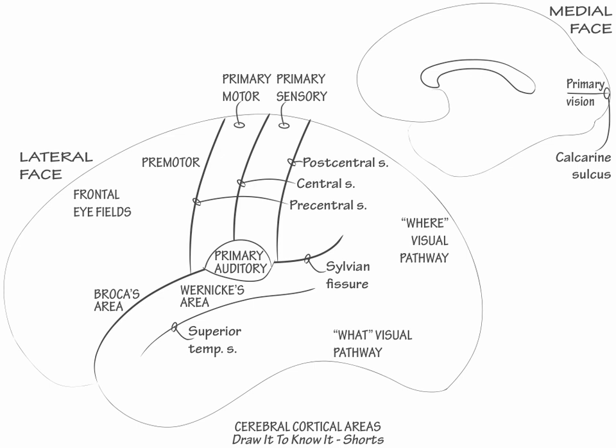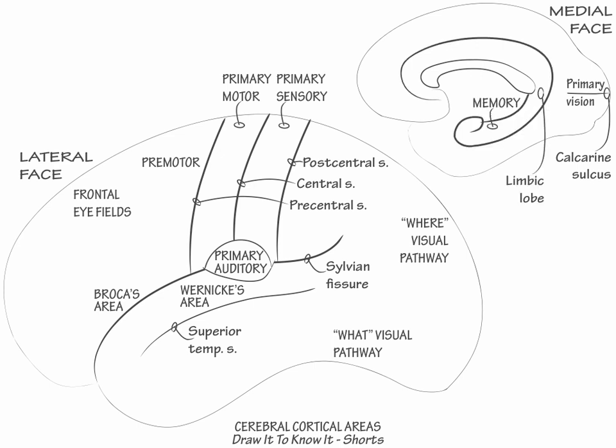Next, draw the limbic lobe. Show that memory processing occurs most notably in the hippocampus and parahippocampal gyrus in the inferior aspect of the limbic lobe.